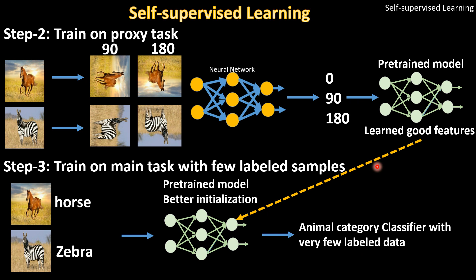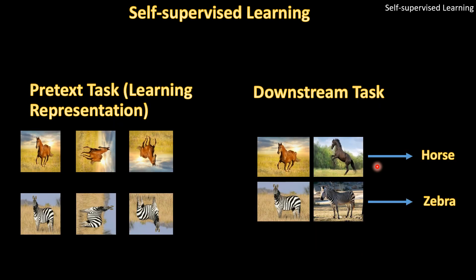So in self-supervised learning there are two tasks. Stage one is the pretext task — learning representations from unlabeled data by defining a task that uses some information from the data itself. Stage two is the downstream task, or main task, where you actually use labels. But the amount of labeled data required is much less because you've already learned good representations from the self-supervised stage.